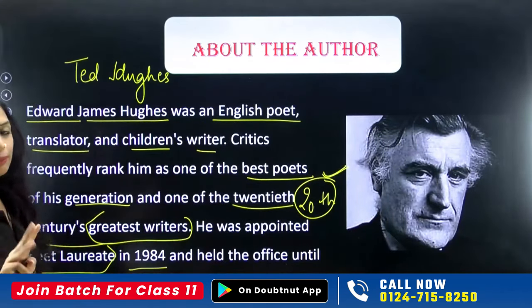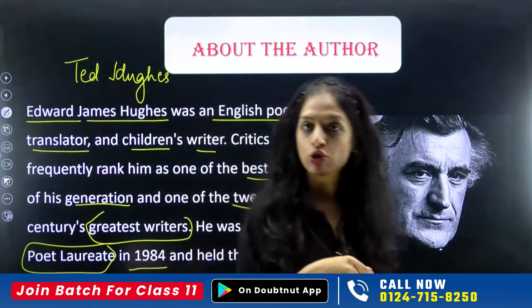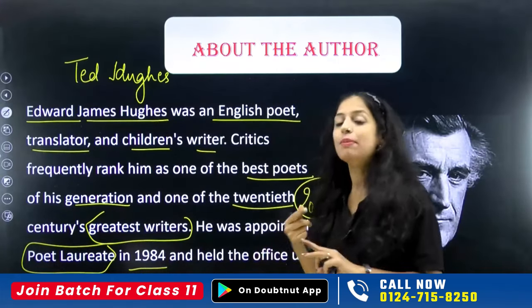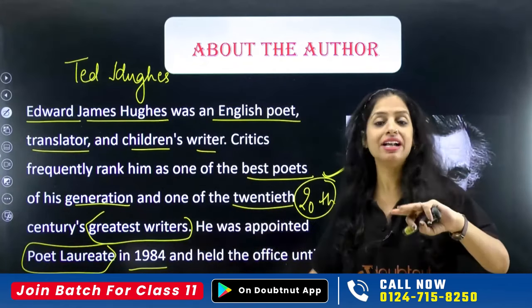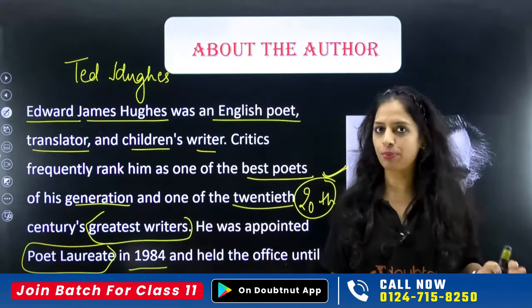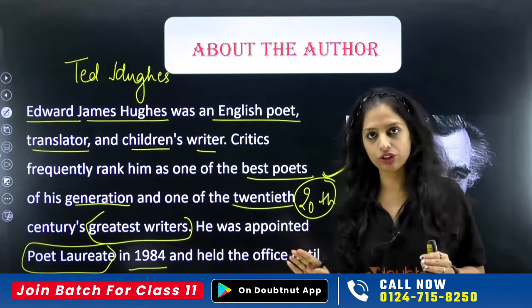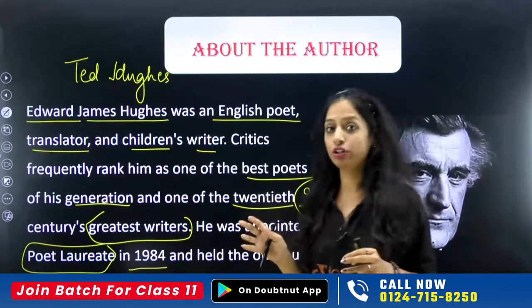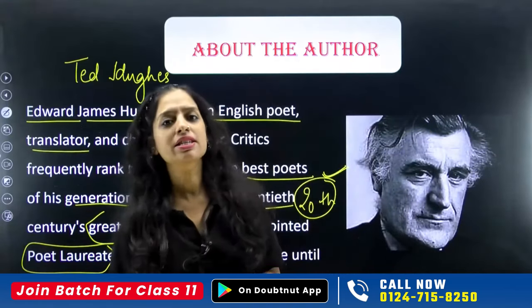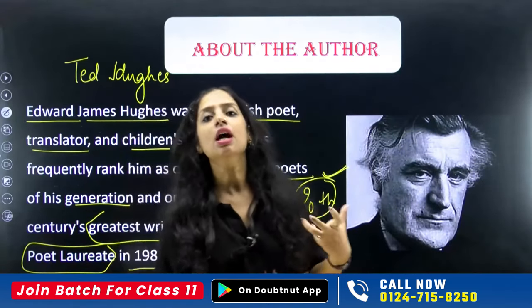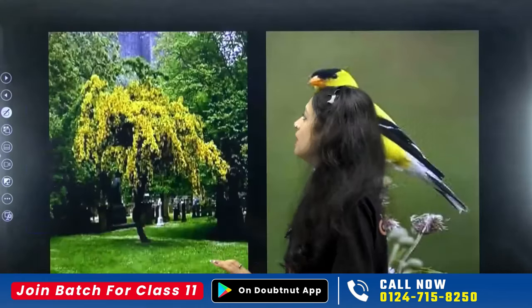Three important points to remember about Ted Hughes: first, his name; second, he was called one of the greatest writers of the 20th century by critics; and third, he was appointed as poet laureate in 1984 and remained so till his last breath. Poet laureate is a very prestigious post that not everyone can easily grab.